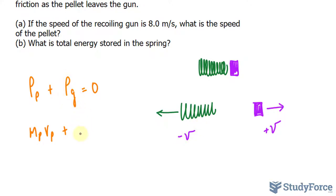So for this, I'll break it down into M sub G for gun times the velocity of the gun will be negative V is equal to zero.